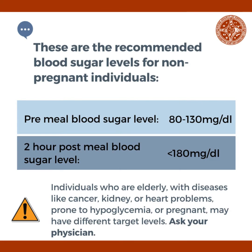These are the recommended blood sugar levels for non-pregnant individuals. Pre-meal blood sugar levels should be 80 to 130 milligrams per deciliter. Two hours post-meal blood sugar level should be less than 180 milligrams per deciliter.